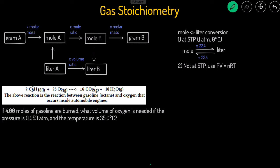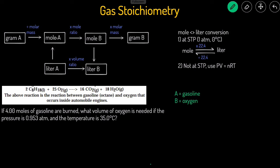We're given a balanced chemical reaction between gasoline (octane) and oxygen — a combustion reaction. We're asked: if 4 moles of octane are burned, what volume of oxygen is needed at the given pressure and temperature? Let's identify A and B. A is our given substance, the octane (C₈H₁₈), and B is what we're solving for, which is oxygen. We're starting at moles of A and trying to get to liters of B, so we'll go from mole A to mole B, then mole B to liters B.